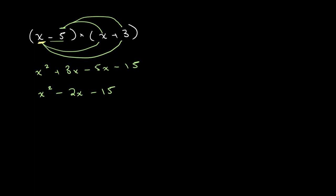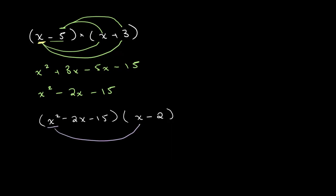Let's look at a slightly more difficult example. Let's say we have the polynomial x squared minus 2x minus 15 — the same one as above — and multiply it by x minus 2. Once again, we want to multiply every single number on the left side with every single number on the right. So for x squared, we multiply it with x, giving us x cubed. Then we multiply it with minus 2, which gives us minus 2x squared. For minus 2x, we multiply it with x, which gives us minus 2x squared.